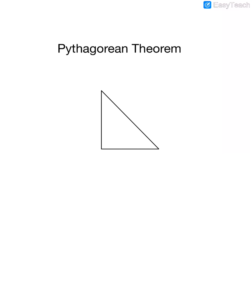The Pythagorean Theorem is a way to find out a missing side of a right triangle. The Pythagorean Theorem can only be used in right triangles, and right triangles are triangles where one of the angles is a right angle, which means that it's a 90 degree angle.